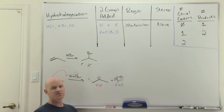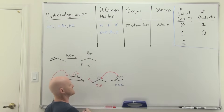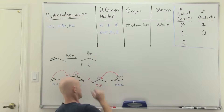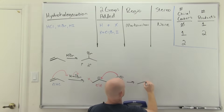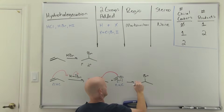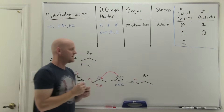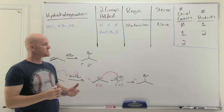Identifying electron-rich and electron-poor species helps with these mechanisms. Bromine with its negative formal charge is electron-rich — a likely nucleophile. The carbocation with its positive formal charge is electron-poor — a likely electrophile. In a typical nucleophilic attack, the nucleophile attacks the electrophile: the bromide attaches to that carbocation carbon, giving us our final product. The H added on the less substituted side, bromine on the more substituted side — Markovnikov addition. No chiral centers formed, so we get one achiral product.